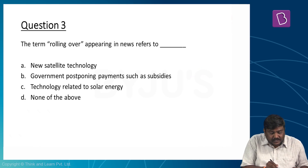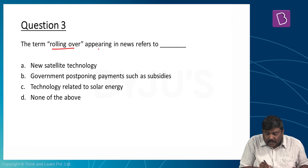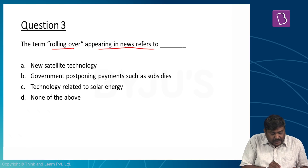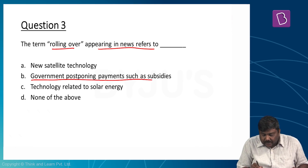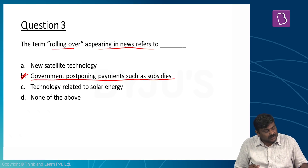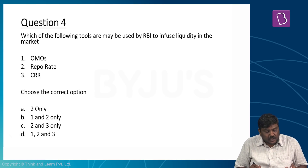Question three: The term 'rolling over' appearing in news refers to government postponing payments such as subsidies. The right option is option B.